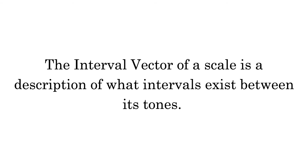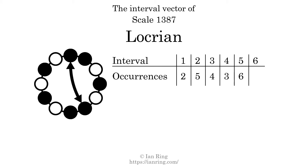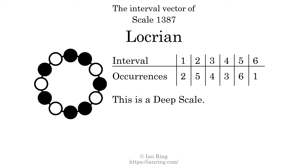The interval vector of a scale is a description of what intervals exist between its tones. There are 2 intervals with the size of 1 semitone, 5 intervals with the size of 2 semitones, 4 intervals with the size of 3 semitones, 3 intervals with the size of 4 semitones, 6 intervals with the size of 5 semitones, and 1 interval with a size of 6 semitones. Each interval appears in this scale a unique number of times. This is rare, and we call this a deep scale.